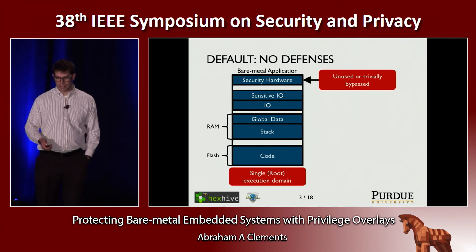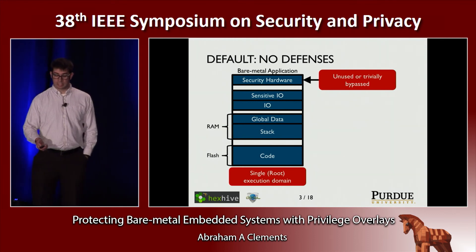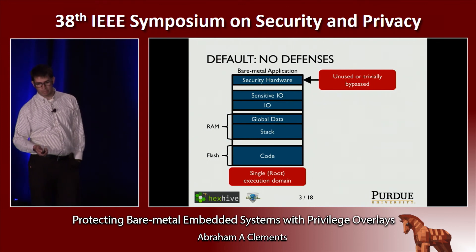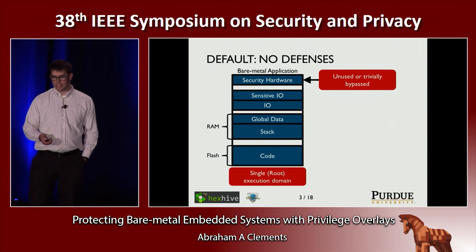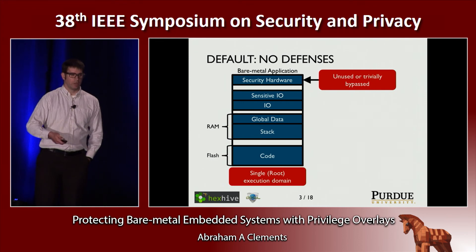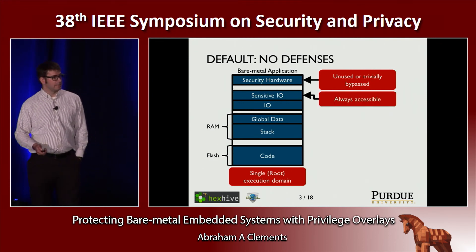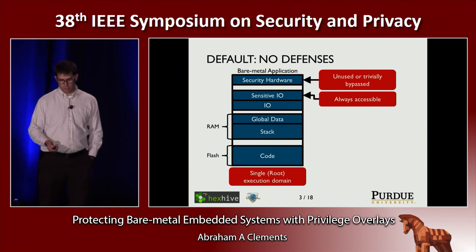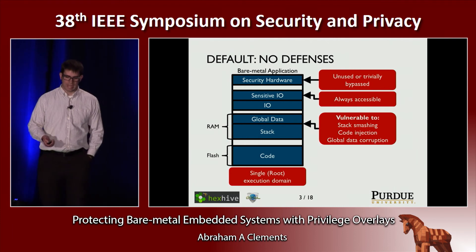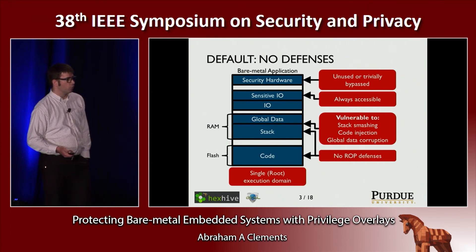Everything on the system runs with a single execution domain — everything runs as root. If there is security hardware, it's unused or trivially bypassed. Because everything is in root and the security hardware is configured by writing to fixed memory locations, a single memory corruption vulnerability would allow you to just turn off any security hardware that's enabled. Any sensitive I/O would be always accessible. Your RAM, global data, and stack are vulnerable to stack smashing, code injection, and global data corruption. Your code and stack employ no ROP defenses.